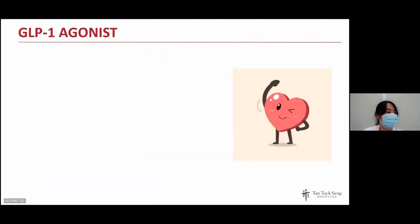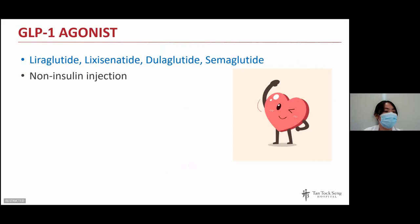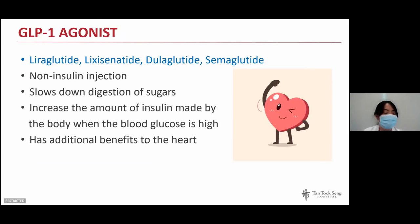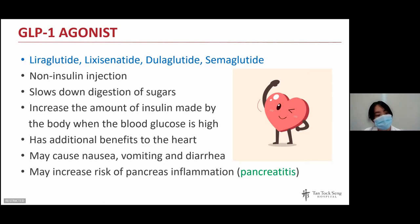The next group is GLP-1 agonists — a non-insulin injection. It slows down the digestion of sugars and increases the amount of insulin made when blood glucose is high. It also has additional benefits to the heart. It may cause nausea, vomiting, and diarrhea, which usually improves with time, and can rarely increase the risk of pancreatitis — so seek medical attention if such symptoms occur.